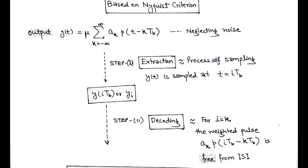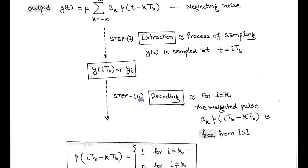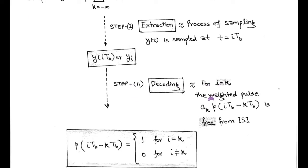In step 1, there is a process of sampling called extraction. In this extraction process, the output y(t) is sampled at t equals i*Tb and results in the sampled output yi. Then decoding is performed in the second step. The weighted pulse is obtained that is free from inter-symbol interference and obtained at i equals k. This weighted pulse is represented by a_k times p(i*Tb minus k*Tb). When we put i equals k, we get a_i times p(0).